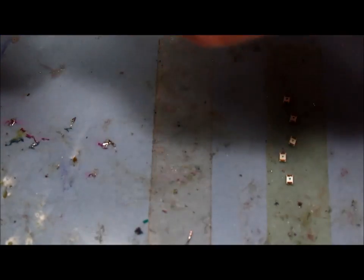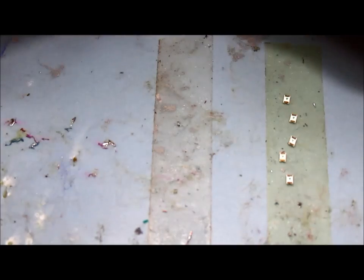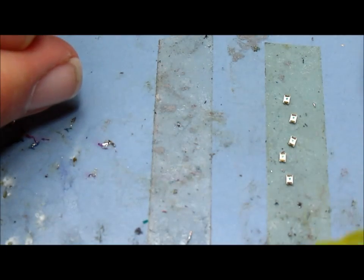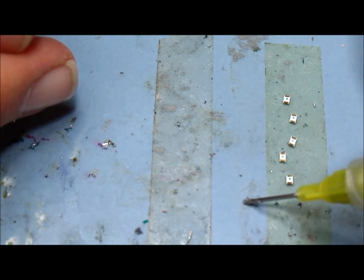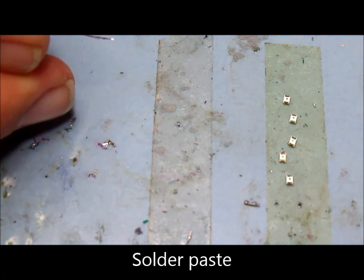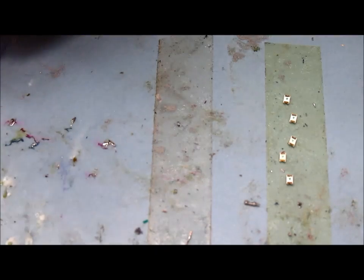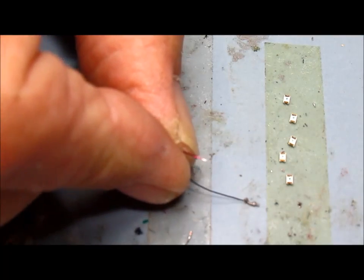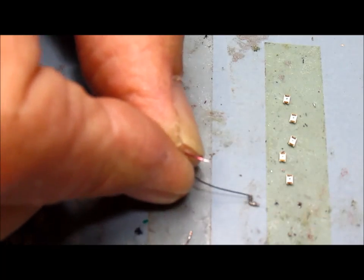I then take my solder paste, put a blob of that onto the tile, get my iron... oops, one wire. Okay, I'll dip the wire into the paste and you can see there's just a tiny little bit of paste there.